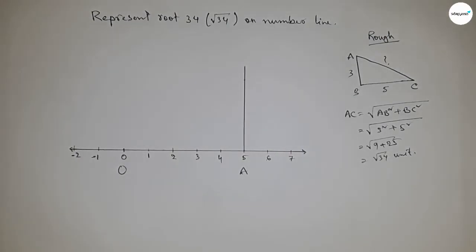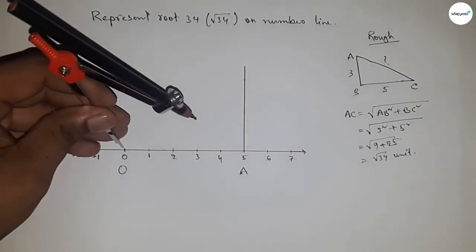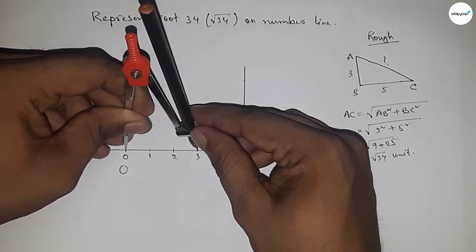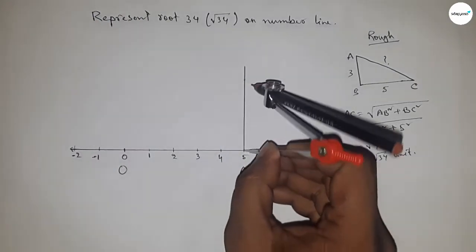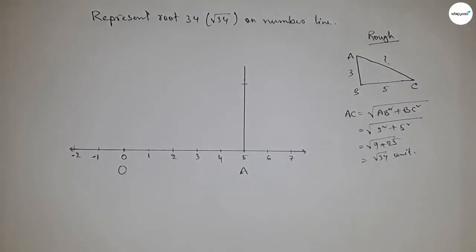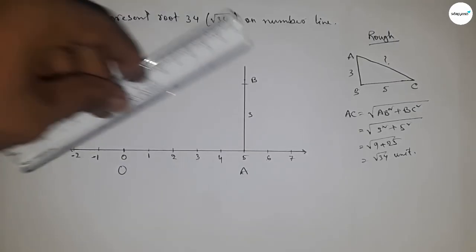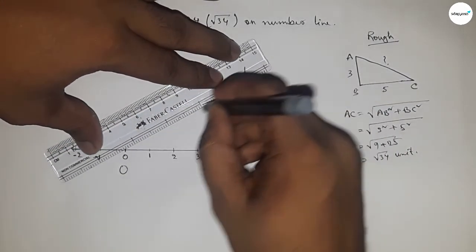Next, take length three units by compass by this way and put here and cut here. So this is B point and this is three unit length, and this is also five unit length. Now joining O and B.